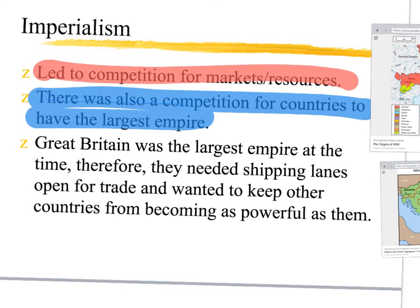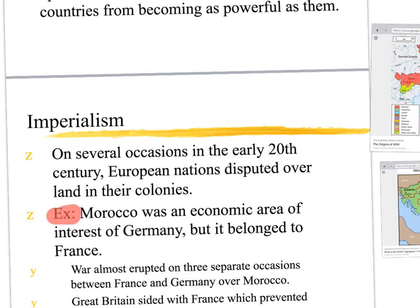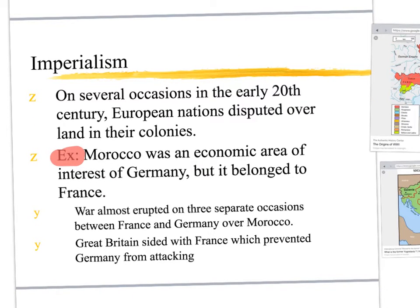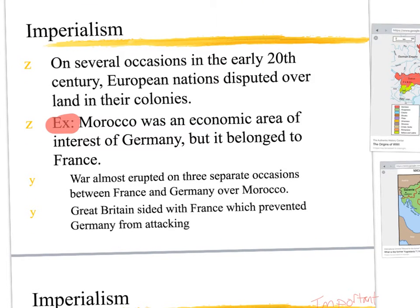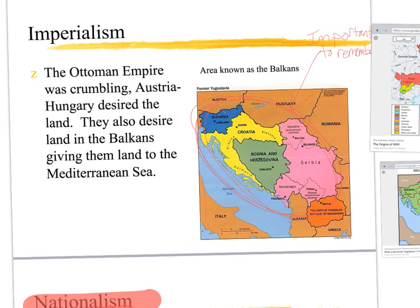Imperialism is going to lead to competition because these countries would go and take over other countries. Between European powers, they're going to compete against each other — wanting to take over more resources and more territory. They almost go to war, like Germany and France, because they already don't like each other. The Germans are trying to take control of Morocco and supply weapons to the Moroccans to get rid of the French so they can rule there. The French are mad about that, war almost breaks out, and Britain has to step in.